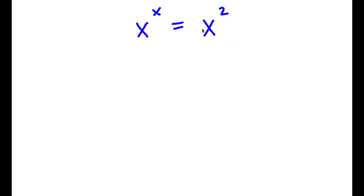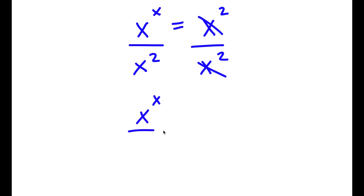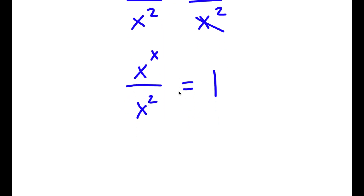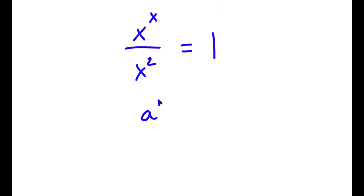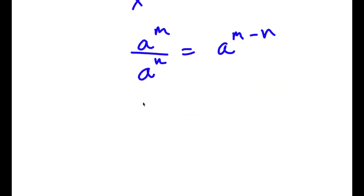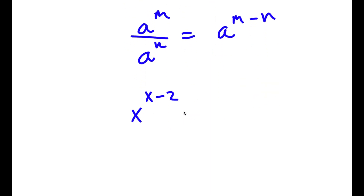So if x to the power of x is equal to x to the power of 2, the first thing I'm going to do is divide both sides by x to the power of 2. These two cancel out, and I'm left with x to the power of x over x to the power of 2 is equal to 1. Using the rule a to the power of m over a to the power of n equals a to the power of m minus n, x to the power of x over x to the power of 2 equals x to the power of x minus 2, which is equal to 1.